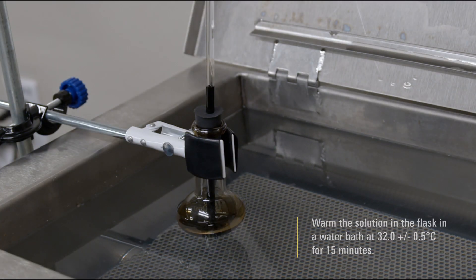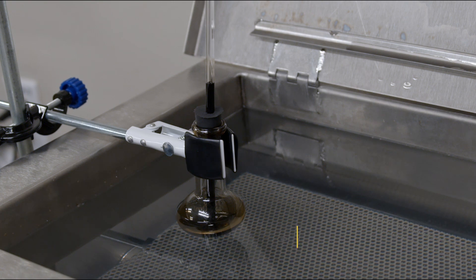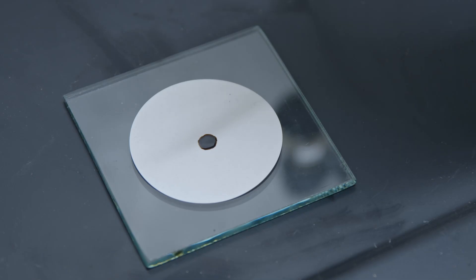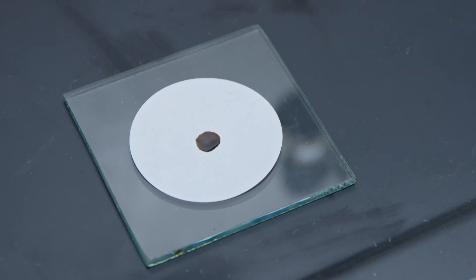Warm the solution in the flask in a water bath at 32.0 plus or minus 0.5 C for 15 minutes. Stir the sample thoroughly, then place a drop of the solution on the filter paper.